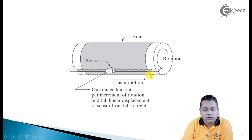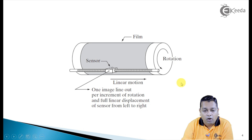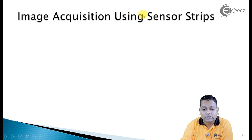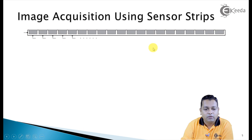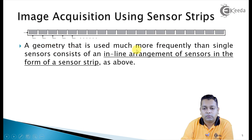The rod has a linear motion — one image line per increment of rotation — and the full linear displacement of the sensor from left to right forms the image with a single sensor. Moving on, if we use a sensor strip instead, we have image acquisition using sensor strips. Multiple sensors — N number — are arranged in an inline formation forming a sensor strip, a geometry used more frequently than a single sensor.